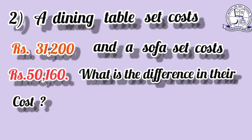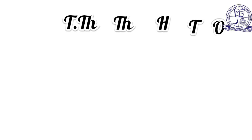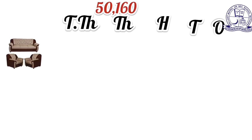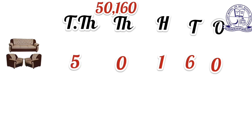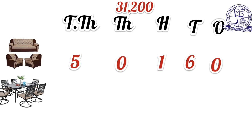First, arrange the given numbers according to their place values. Since we have 5-digit numbers, we write: ones, tens, hundreds, thousands, ten-thousands. For 50,160: ones=0, tens=6, hundreds=1, thousands=0, ten-thousands=5. For 31,200: ones=0, tens=0, hundreds=2, thousands=1, ten-thousands=3.